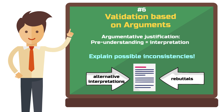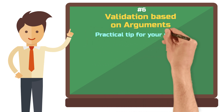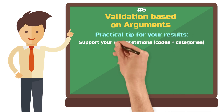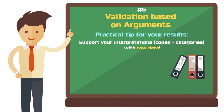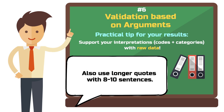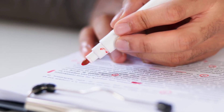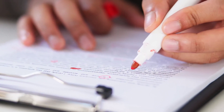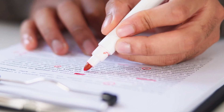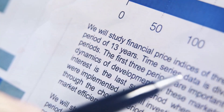In practice, if you want to remove any doubt that your interpretations are valid, you should provide as much raw data as possible. You can include a quote of eight to ten sentences if it is particularly interesting for a certain code or category in your paper or thesis. I often see students including direct quotes that are exactly one sentence long — this makes it difficult to grasp the context of the statement. So please include longer quotes from your raw data in your findings section, as this makes your interpretations easier to follow and justify.